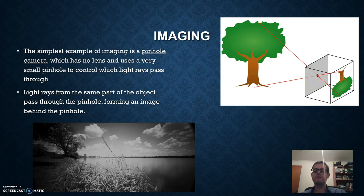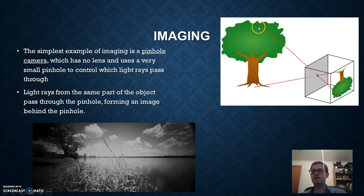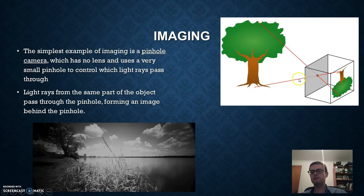The way a pinhole camera forms an image is that because the hole is so tiny, light rays can really only go in a straight line from the object to the back wall of the box. The rays that reach the bottom part can only come from the top of the tree — unlike a lens where you can bend rays, here only light rays that travel in a straight line through the tiny hole can reach the back. Rays from the bottom of the tree similarly travel in a straight line through the hole to hit the top of the box.